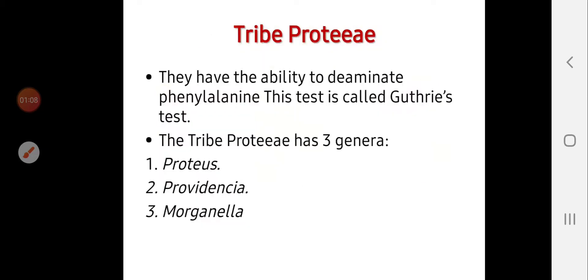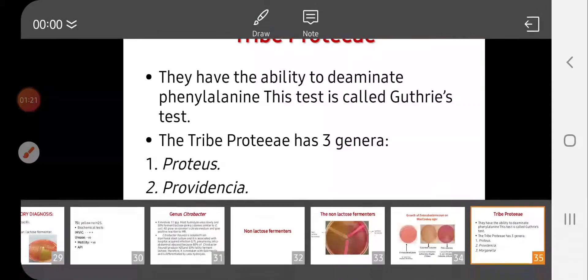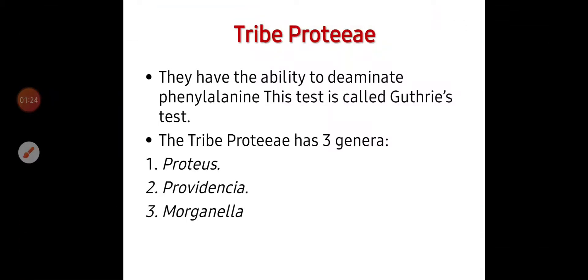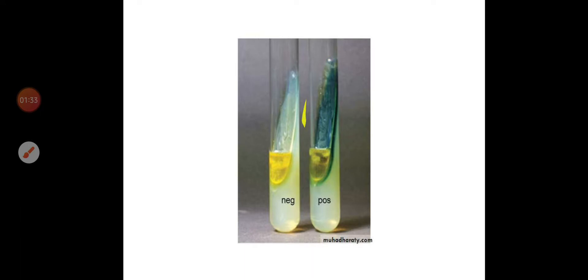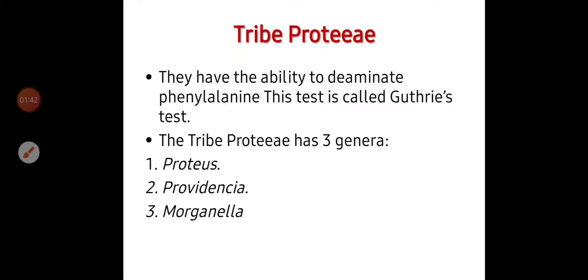First of all, we have Tribe Proteeae. These microorganisms have the ability to deaminate phenylalanine. This is important — Tribe Proteeae are the only Enterobacteriaceae that have the ability to deaminate phenylalanine, producing a green color on the surface of the reaction. So they are phenylalanine deaminase positive, and this test is called the PAD test.